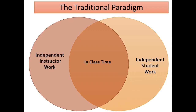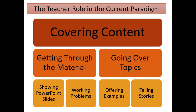Every class has three components: independent instructor work outside of class, independent student work — homework, studying, those two to three hours outside of class for every one hour in class — and the in-class time where those overlap. The instructor takes what she's done outside of class and the student takes what she's done outside of class, and they meet for 50 minutes three days a week, or 75 minutes two days a week. In the traditional knowledge transmission paradigm, this tends to look familiar: we cover content, get through the material, go over topics.